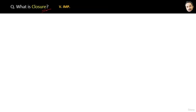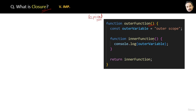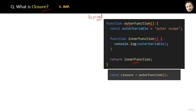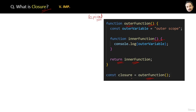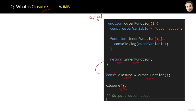What is a closure? This is a very important question asked in many interviews. Suppose we have an outer function and inside it an inner nested function. We return the inner function from the outer function. When we call the outer function it returns the inner function, which we assign to a 'closure' variable. Then we call the closure function — it calls the inner function, which accesses the outer variable of the outer function due to lexical scoping, and 'outer scope' is logged in the output.